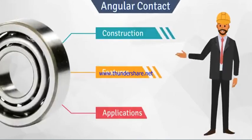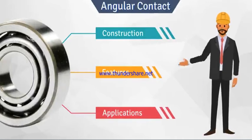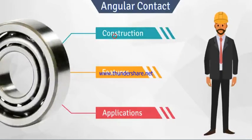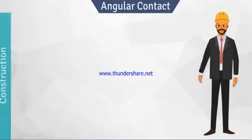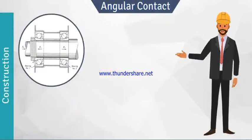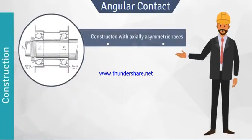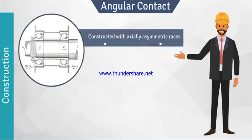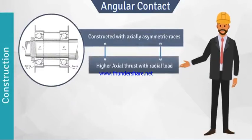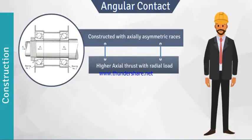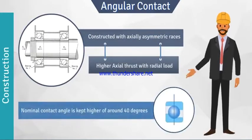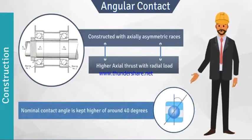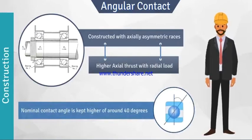Click each to know more about angular contact ball bearings. Angular contact ball bearings are constructed with axially asymmetric races. They have higher axial thrust with radial load, and the nominal contact angle is kept higher, at around 40 degrees.